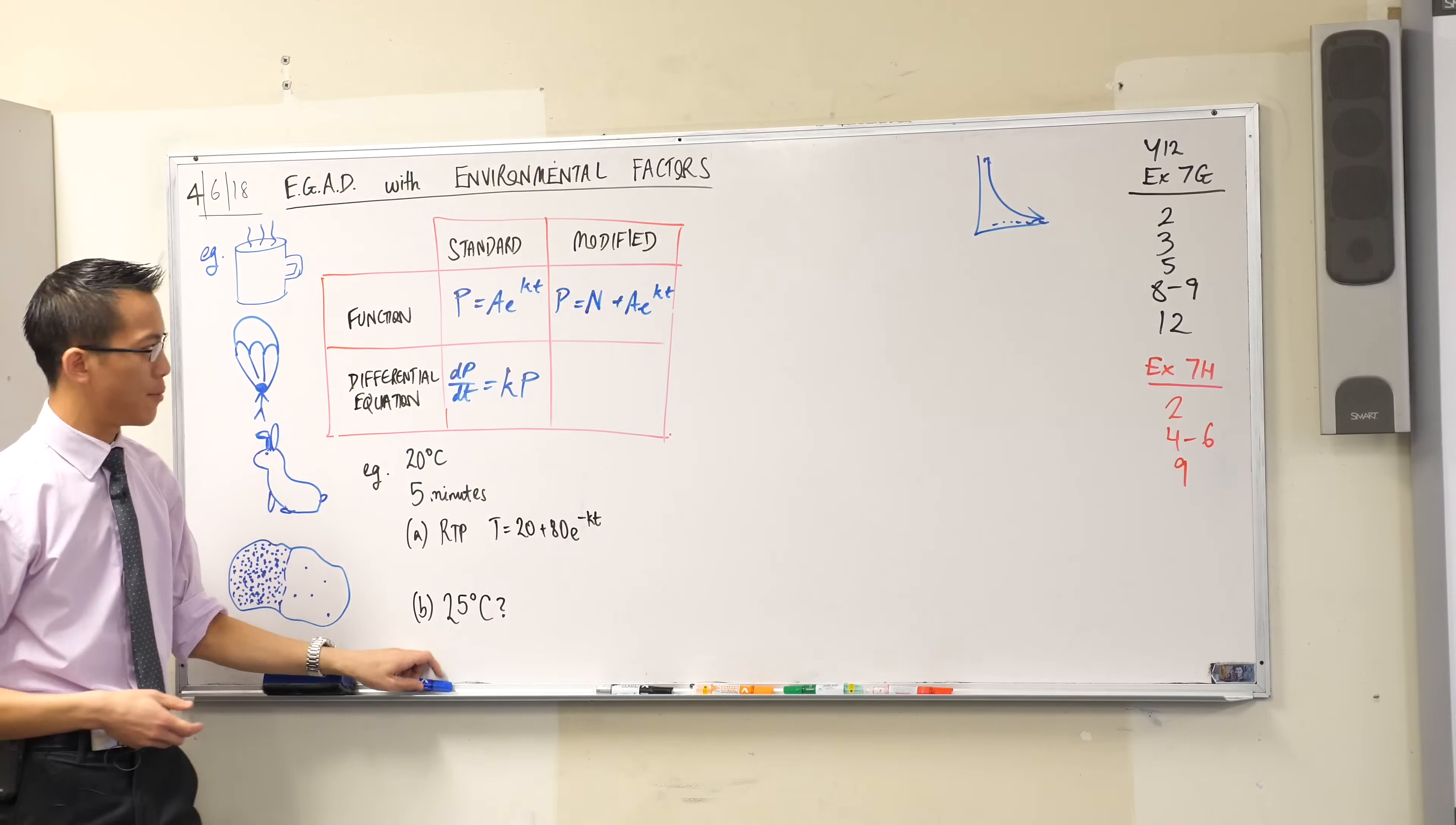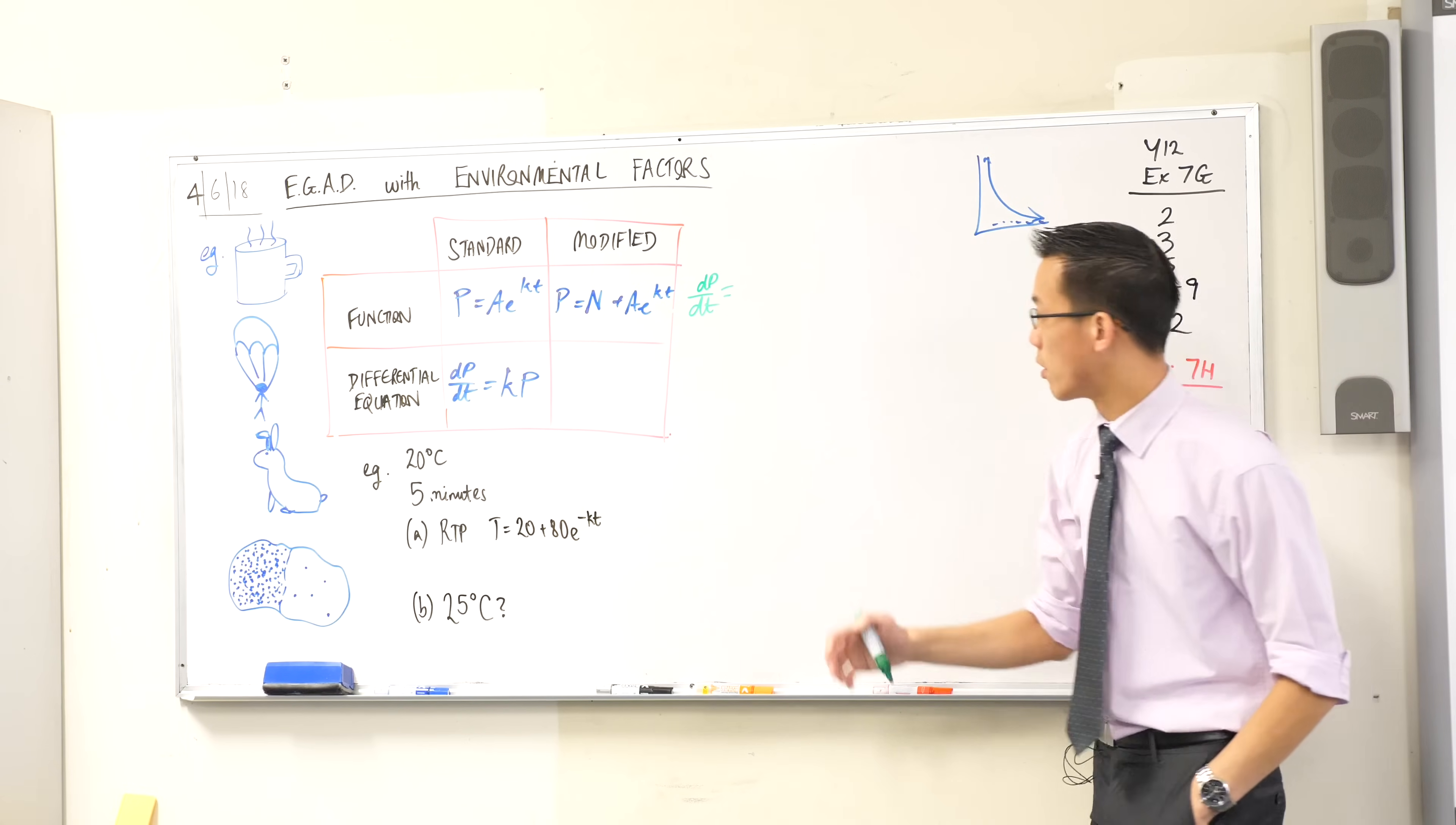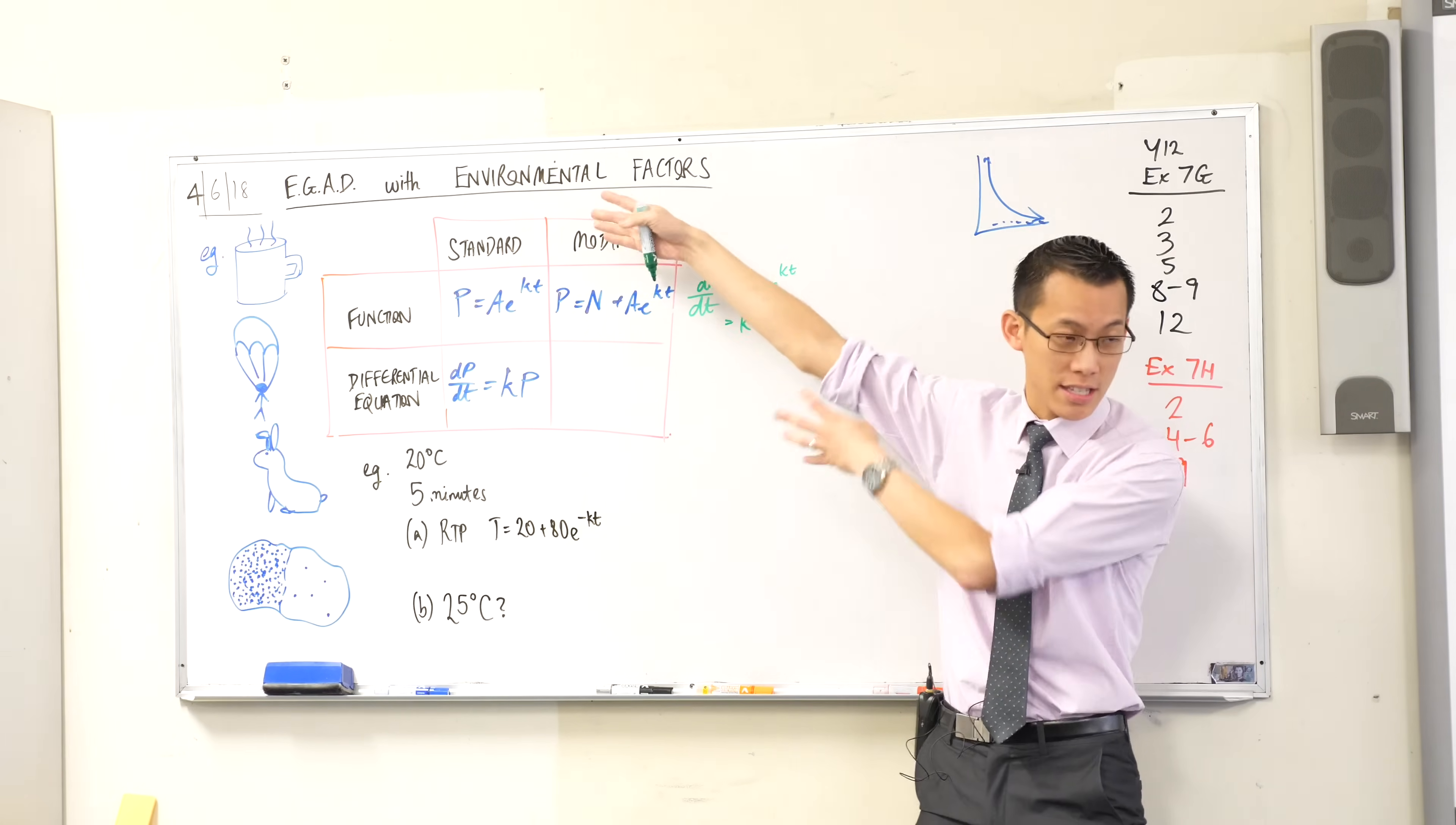Let's think about what kind of differential equation would result, because different functions should have different differential equations. If I were to differentiate this modified equation, what happens to the capital M? It's a constant so it goes when you differentiate. What you get left with is k times ae^(kt), almost everything you had before.